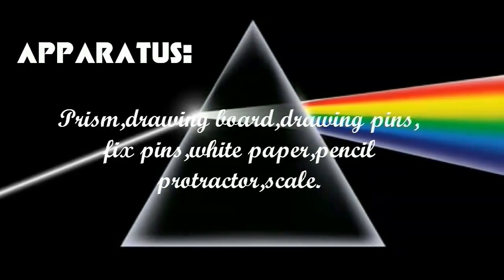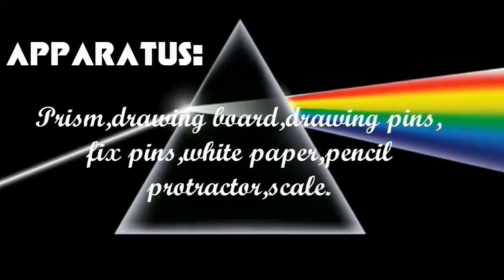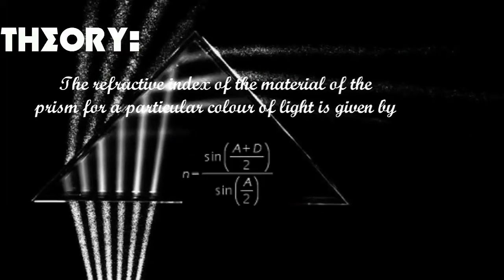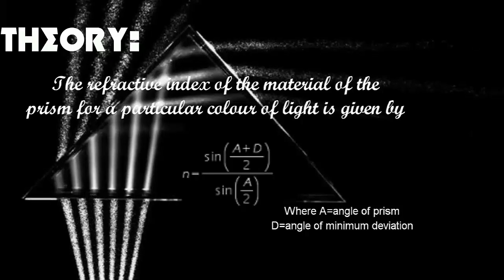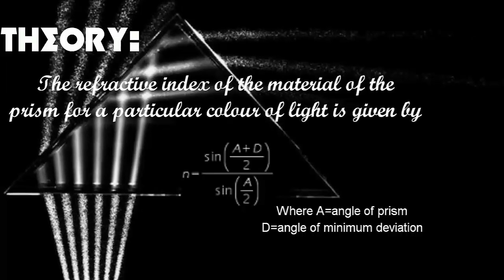Apparatus required: prism, drawing board, drawing pins, fixed pins, white paper, pencil, protractor, and scale. Theory of the practical: the refractive index of the material of the prism for a particular color of light is given by